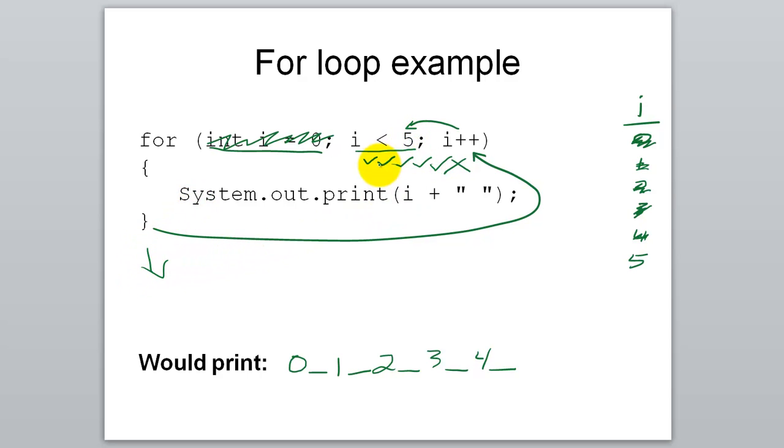And you'll see that we ran one, two, three, four, five times. So that's the order of events in a for loop. Very similar to what you saw with while loops except you can write it much more succinctly.